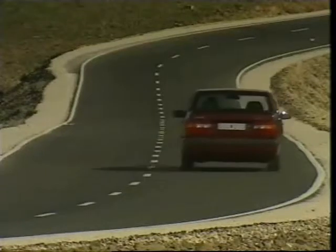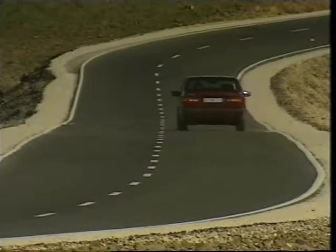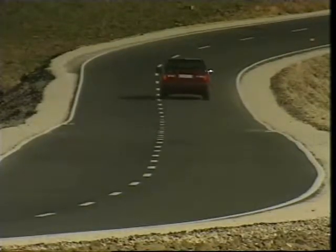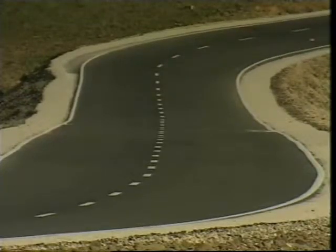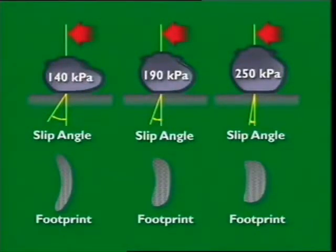Radial ply tyres generate much higher cornering forces than cross ply tyres, which is why the two tyre types should not be used on the same vehicle. Slip is also influenced by inflation pressures, so manufacturer recommendations should always be followed.